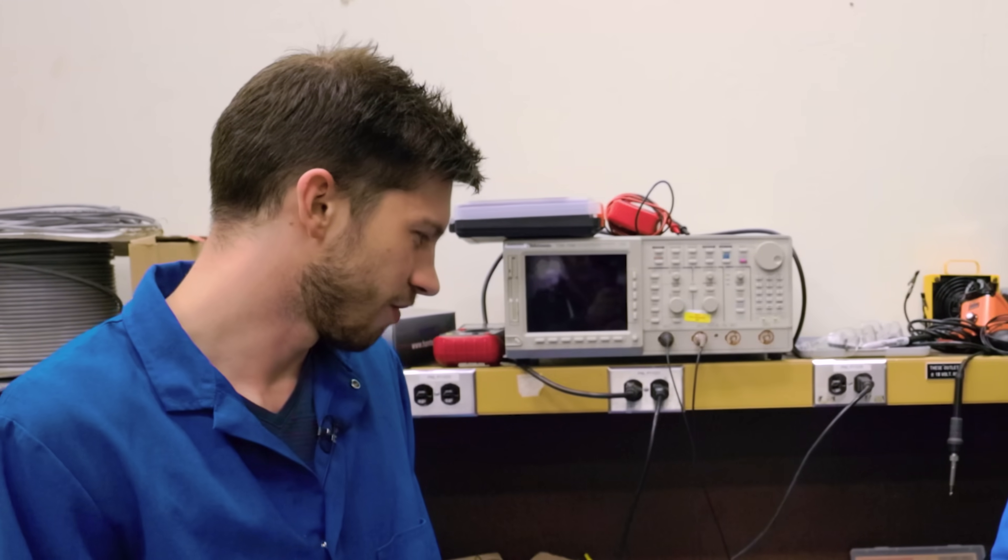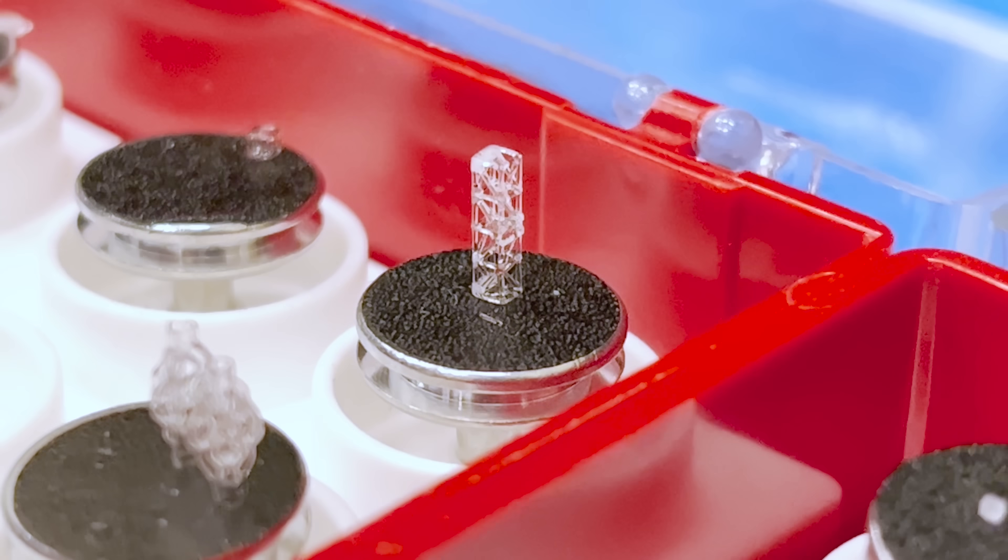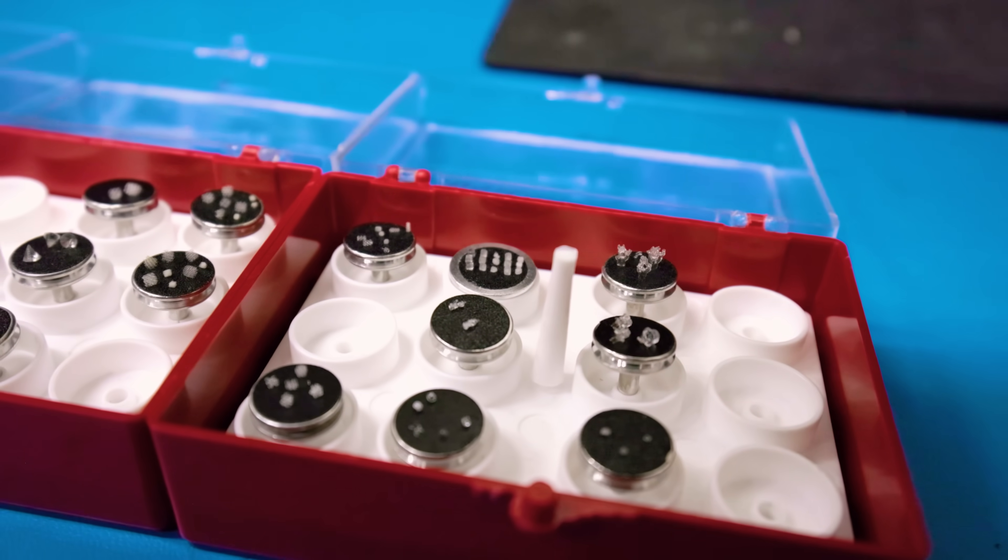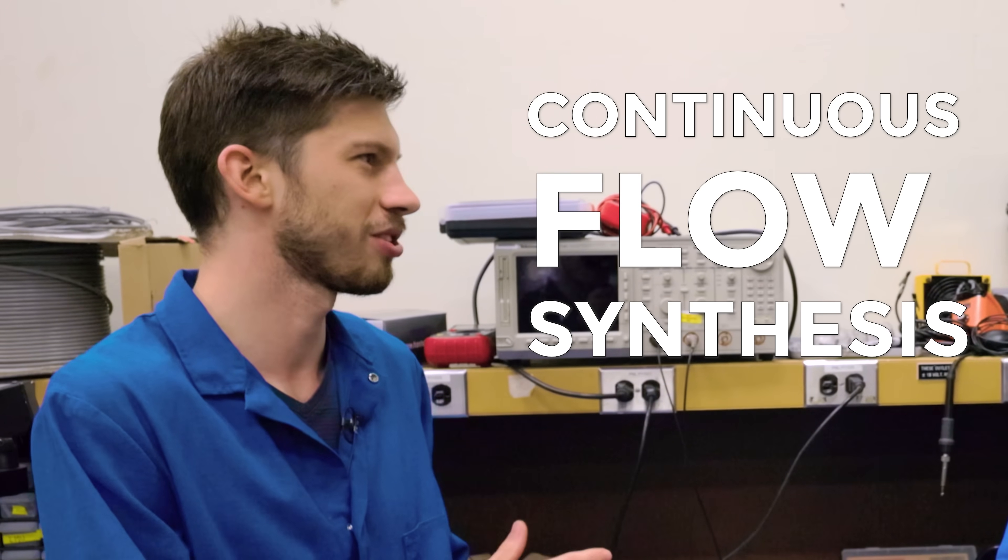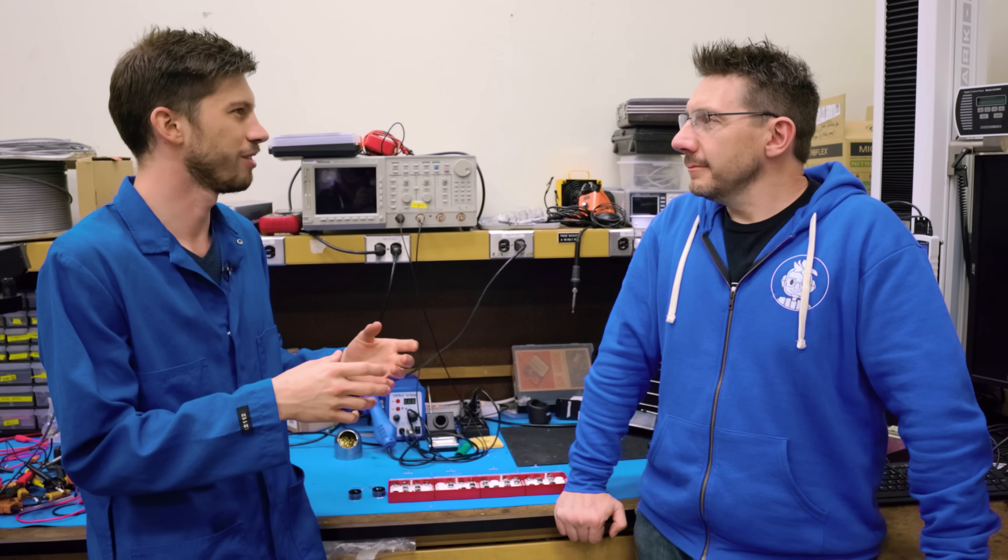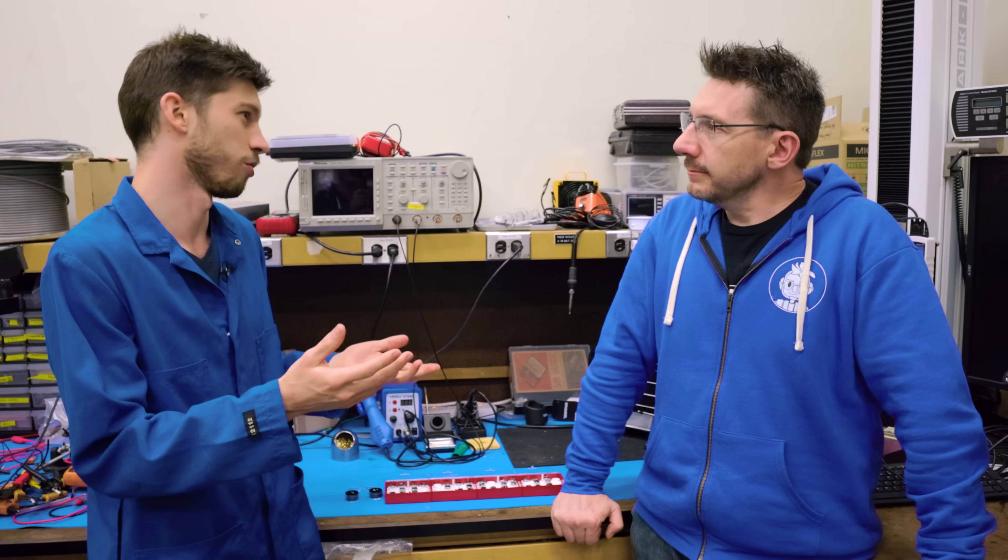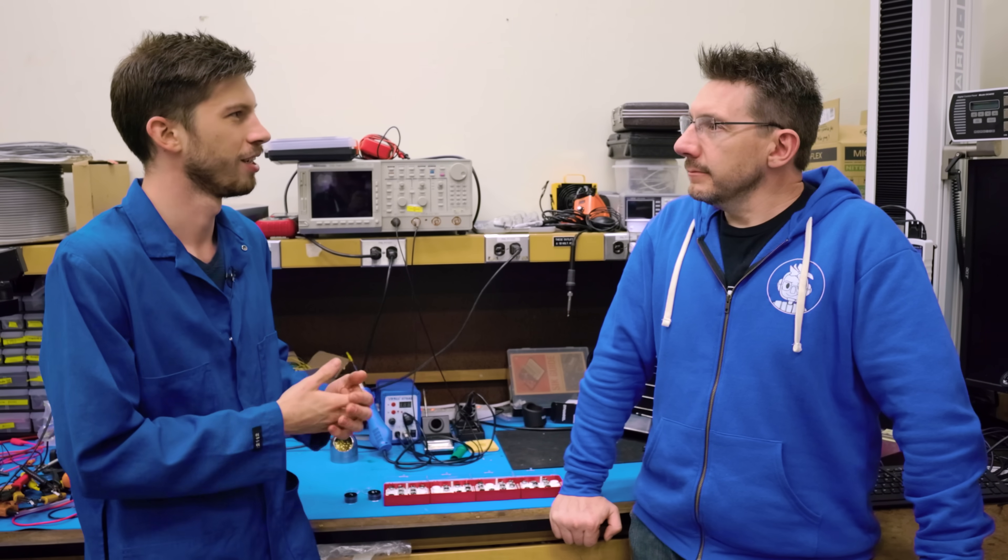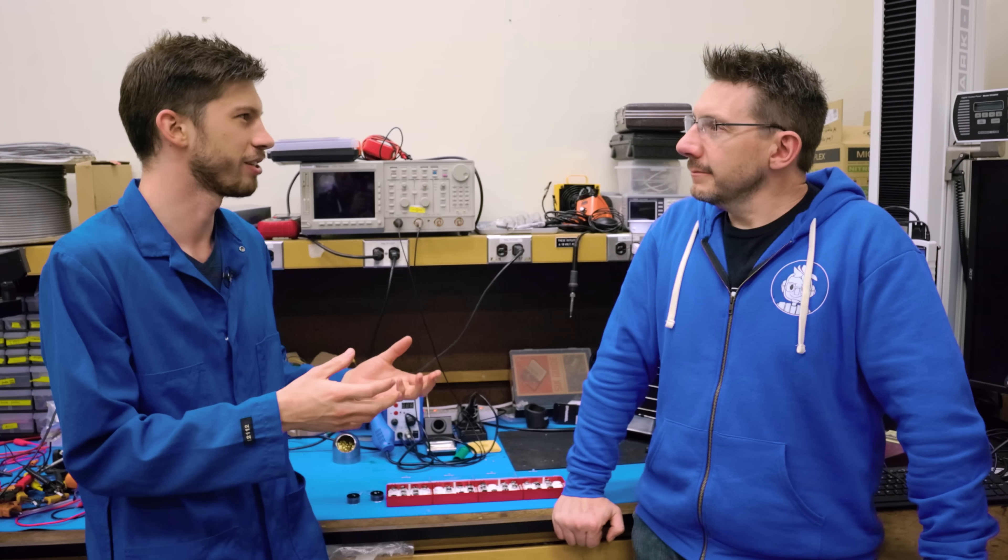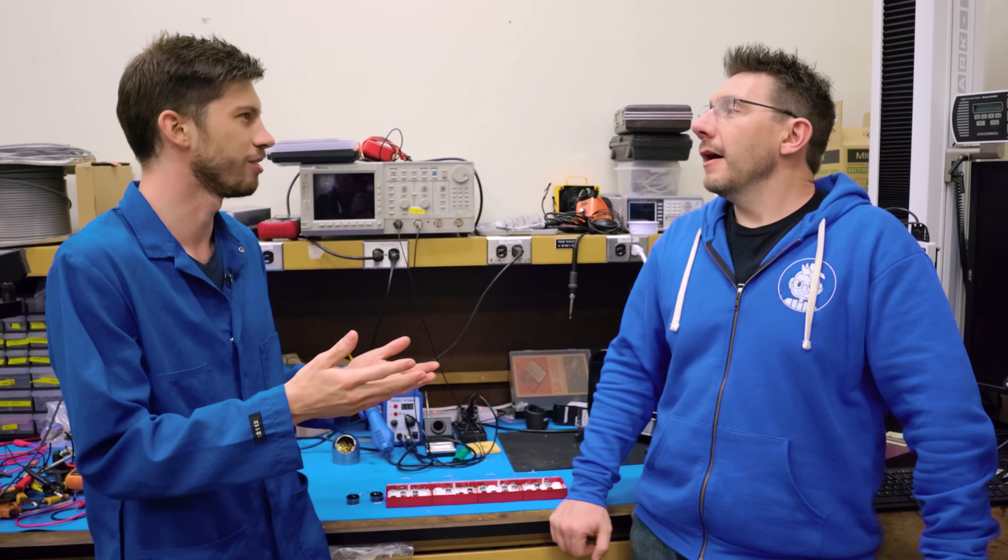One use case is for microfluidic structures, which are used to synthesize new materials in a way that's sometimes called continuous flow synthesis. In this application, you need sometimes high temperature liquids or corrosive liquids or acids or something. And if you print plastic or polymer microfluidic devices, these can degrade with these liquids.